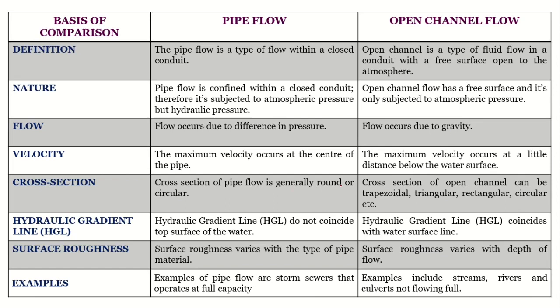Regarding cross section, in pipe flow the mostly used cross section is circular, whereas in open channel you can design based on various geometries — trapezoidal, triangular, rectangular, circular, etc. — with trapezoidal being most widely used because of its larger area. Regarding the hydraulic gradient line (HGL): the total energy line is the summation of pressure head, kinetic head, and datum head, whereas HGL is the summation of pressure head and datum head alone. For pipe flow, the HGL does not coincide with the top water surface, but for open channel flow the HGL always coincides with the free water surface.